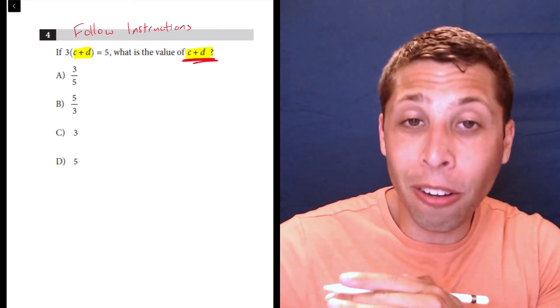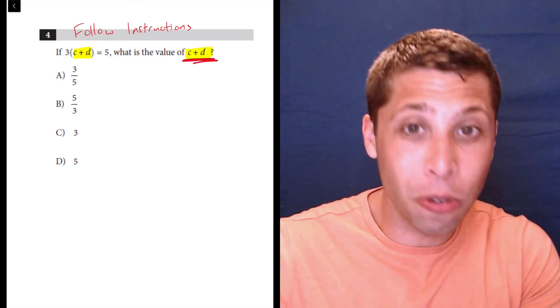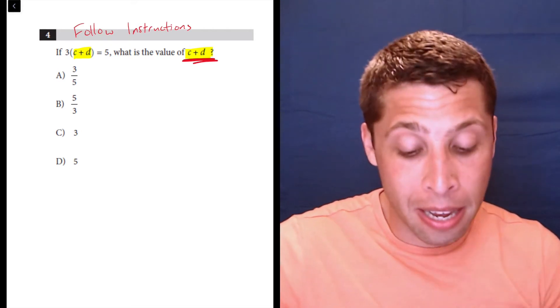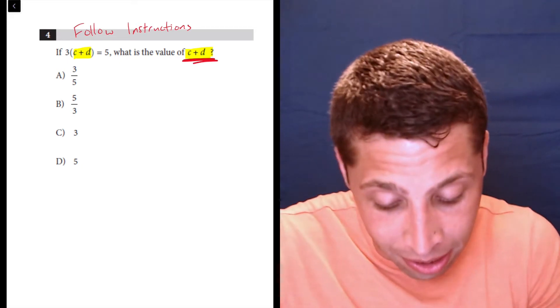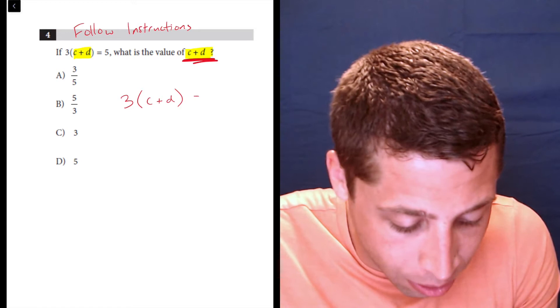So you cannot solve for c and d separately. It's not possible, because we only have this one equation. There's two variables, one equation, and it can't be done. But it's very easy to solve for c plus d as a unit. And so that's what we're going to do.